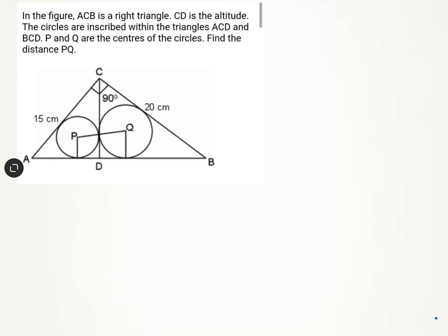We will proceed step by step. In the first step, we will find distances AD, BD, and CD. In any triangle, if one side is 3 and another side is 4, the hypotenuse is 5, since 3² + 4² = 5². This is true for 3x, 4x, and 5x as well. In our triangle, one side is 15 and the other side is 20, so the third side is 25. Using the 3-4-5 concept, 5×3=15, 5×4=20, therefore hypotenuse is 5×5=25.